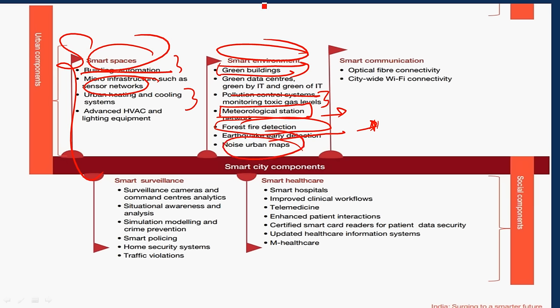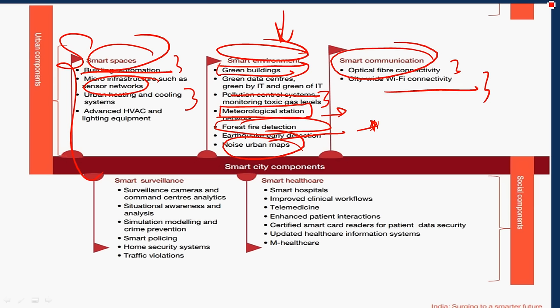In smart communication, the components include optical fiber connectivity and city-wide Wi-Fi connectivity. In the future, internet will be a basic fundamental right, so we need to integrate this from now on in order to provide this facility to all people.